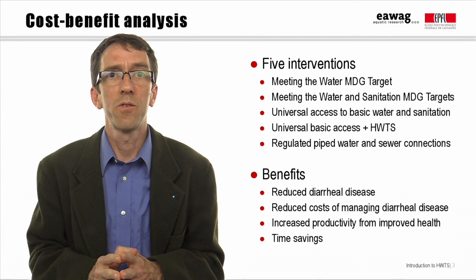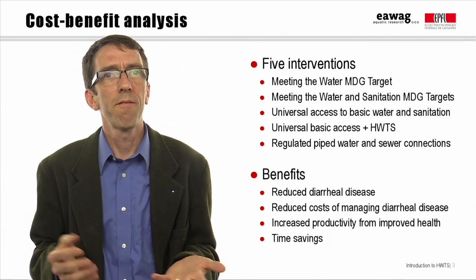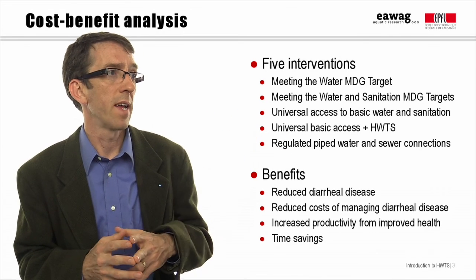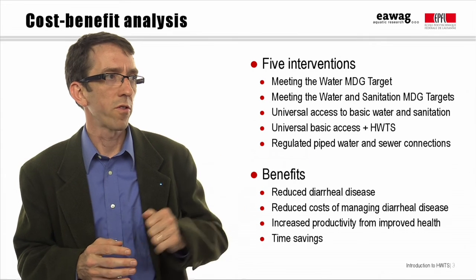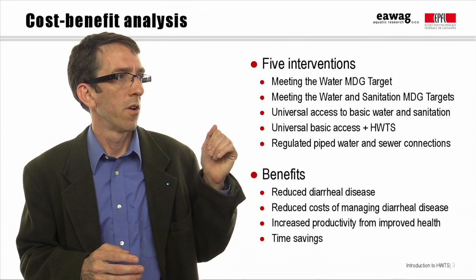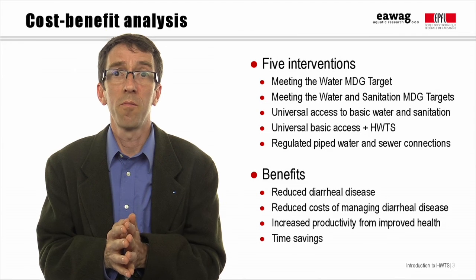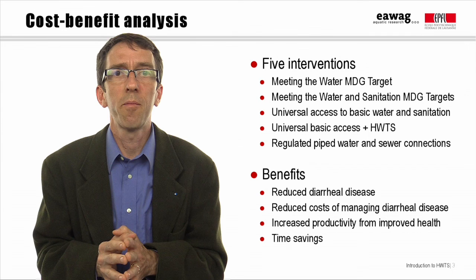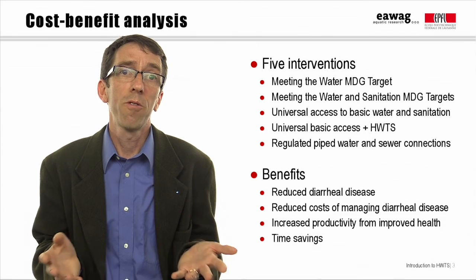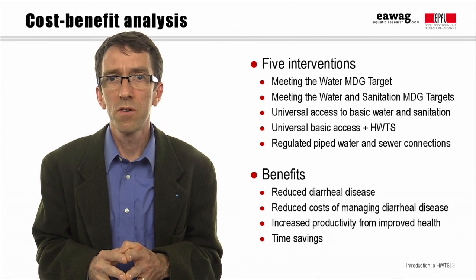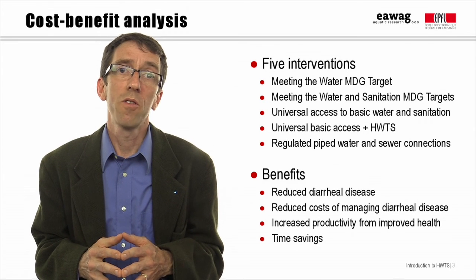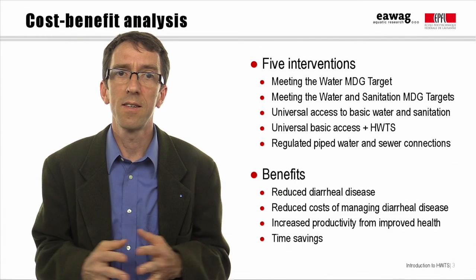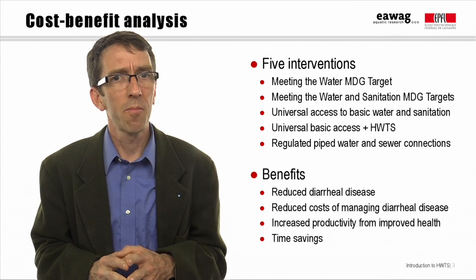An important cost-benefit analysis was done by Guy Hutton and colleagues, looking at five possible WASH interventions: meeting the water MDG target; meeting both the water and sanitation MDG targets; universal access to basic water and sanitation; universal basic access along with disinfection using HWTS; and finally, a higher level of service — regulated piped drinking water and sewerage. The authors calculated the costs and benefits of each intervention across different geographic regions. Benefits included reduction in diarrheal disease in terms of both incidence and mortality, as well as several economic benefits.